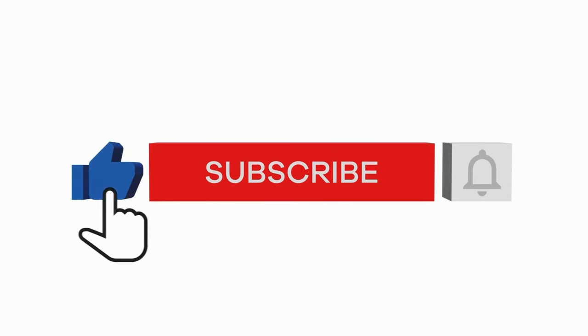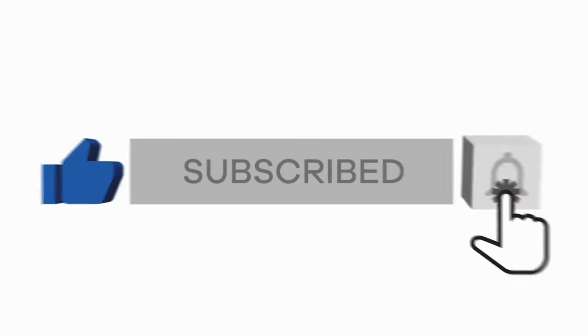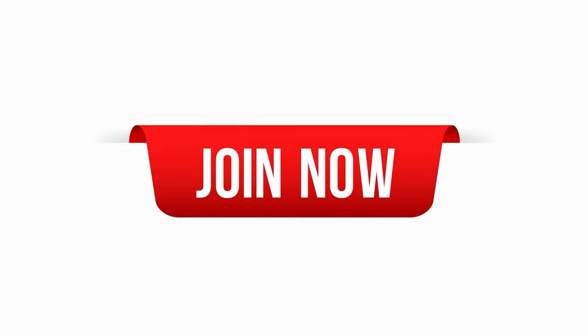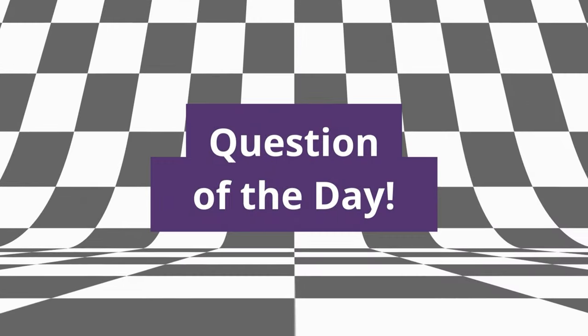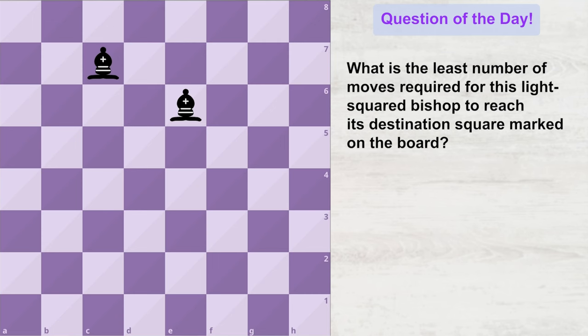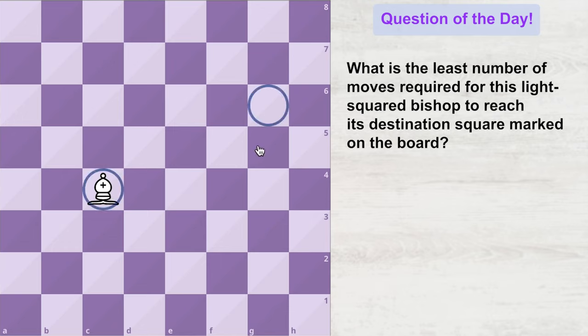Please do like this video and don't forget to subscribe to my channel. Also, do not forget to check out the amazing membership programs we have for you. Now comes the most interesting part of the video — the question of the day. If this particular bishop wants to reach a specific square, what is the least number of moves it would take? Do give your answers in the comments and I shall see you in the next video. Bye!